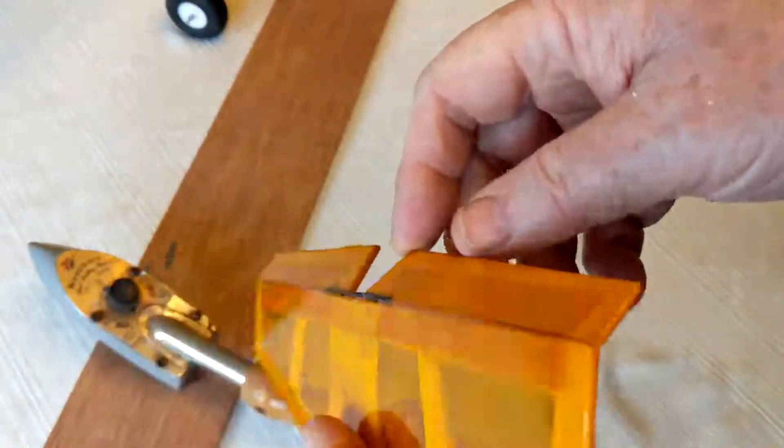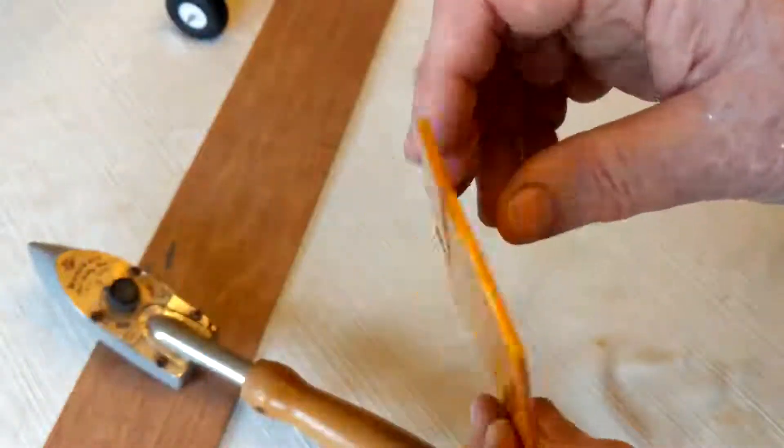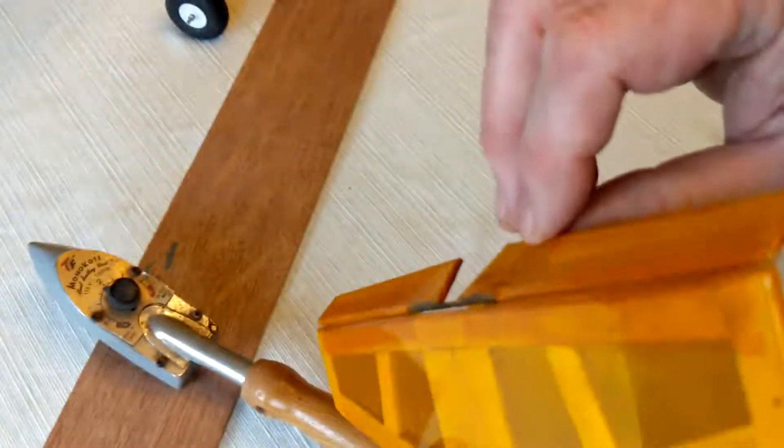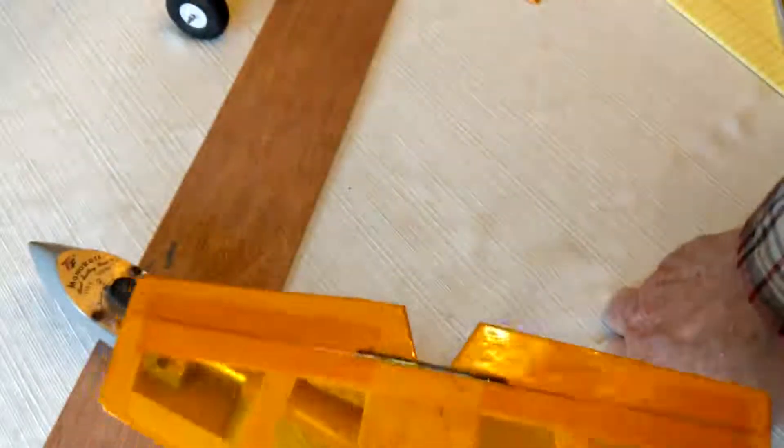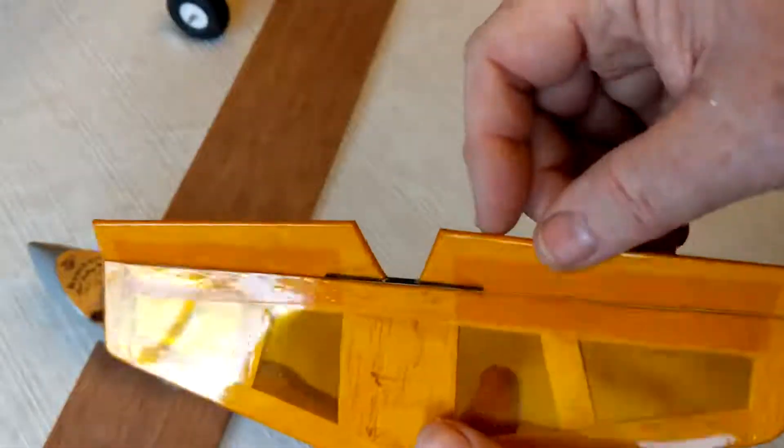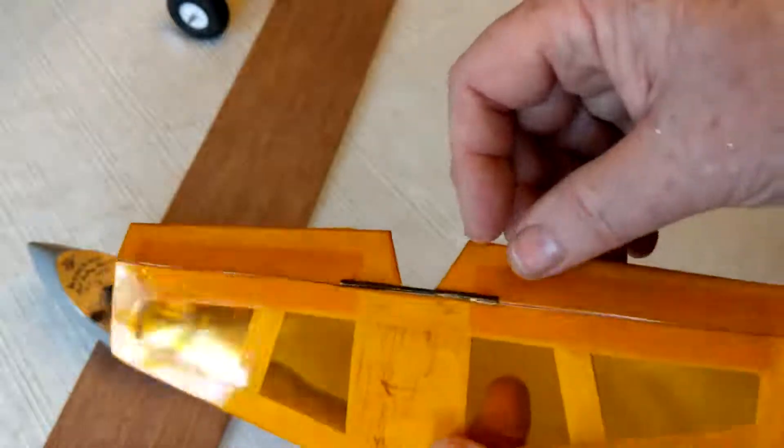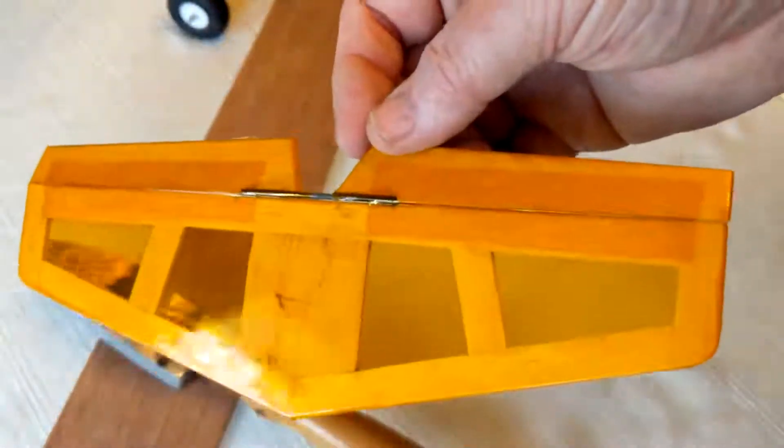And now here is our final product. I have got hours and hours of flight time on hinges like this. Haven't had one fail. They're quick, they're strong, they're durable, they're flexible. And if you do them full length like this, you also have a sealed hinge. So that's how you make an X hinge.